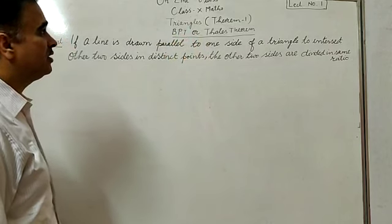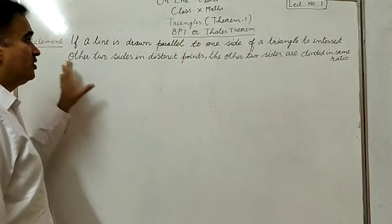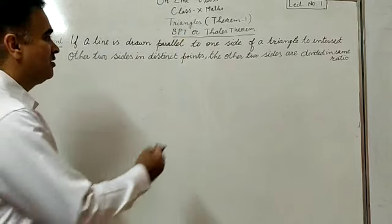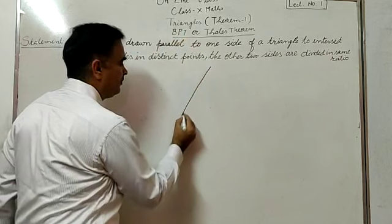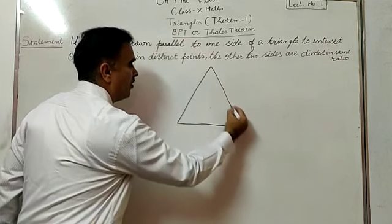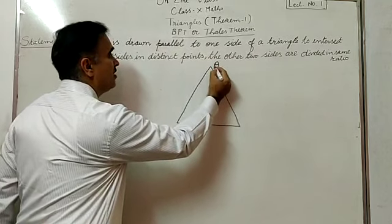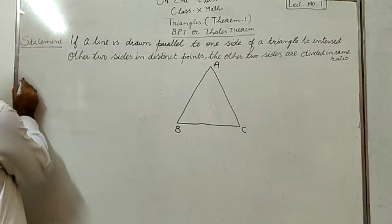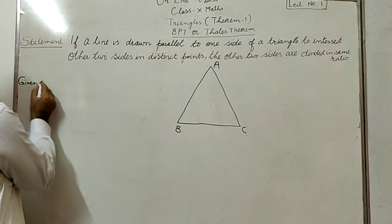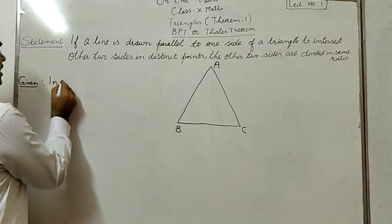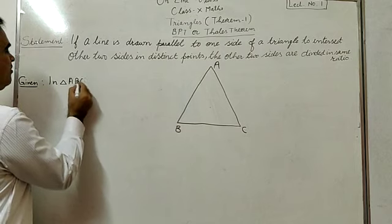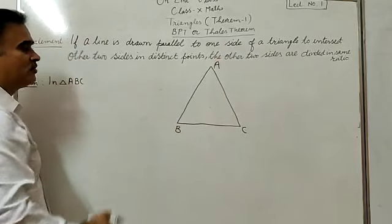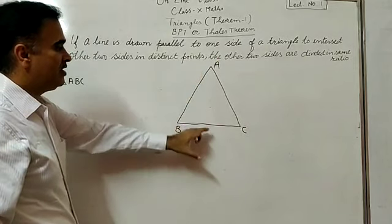The statement of this first theorem is: if a line is drawn parallel to one side of a triangle. In a triangle ABC, how many sides are there? AB is one side, BC another, and AC. If a line is drawn parallel to one side...